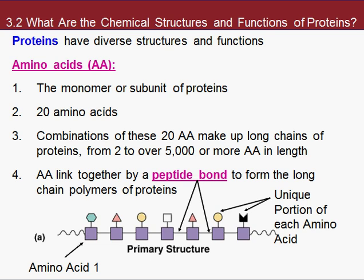Proteins are made out of building blocks — their monomer is called amino acids, sometimes abbreviated to AA. There are only 20 amino acids to choose from, and they come together in different arrangements to make all the hundreds of thousands of proteins in living organisms. These amino acids can come together — you can have two, four, five, or ten, or thousands of them to make a protein. We have to link them together to make these large macromolecules.